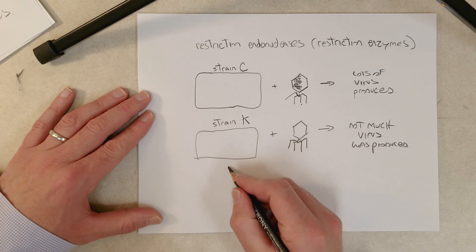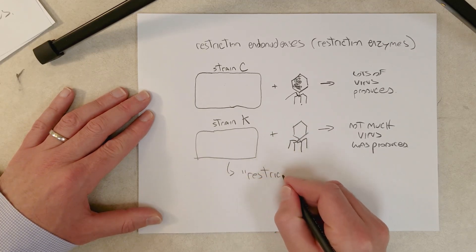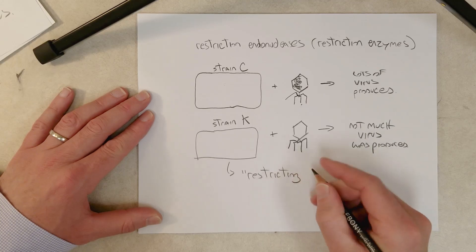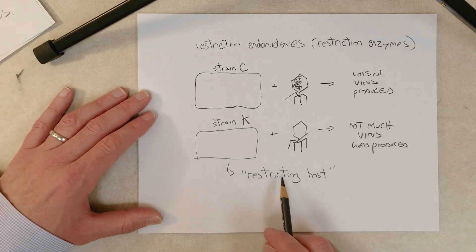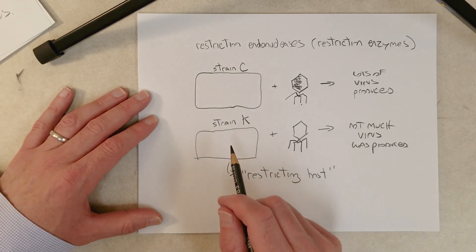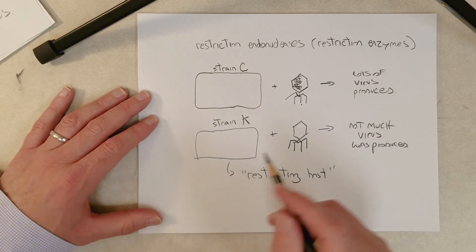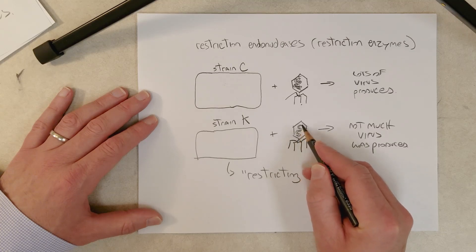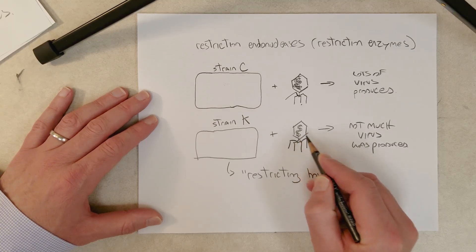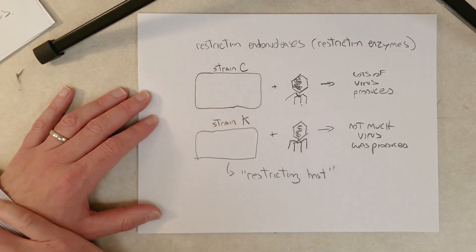So strain C was called the restricting host, and it was found that it's the restricting host because it has a restriction enzyme that specifically cuts a sequence within the DNA of the phage.